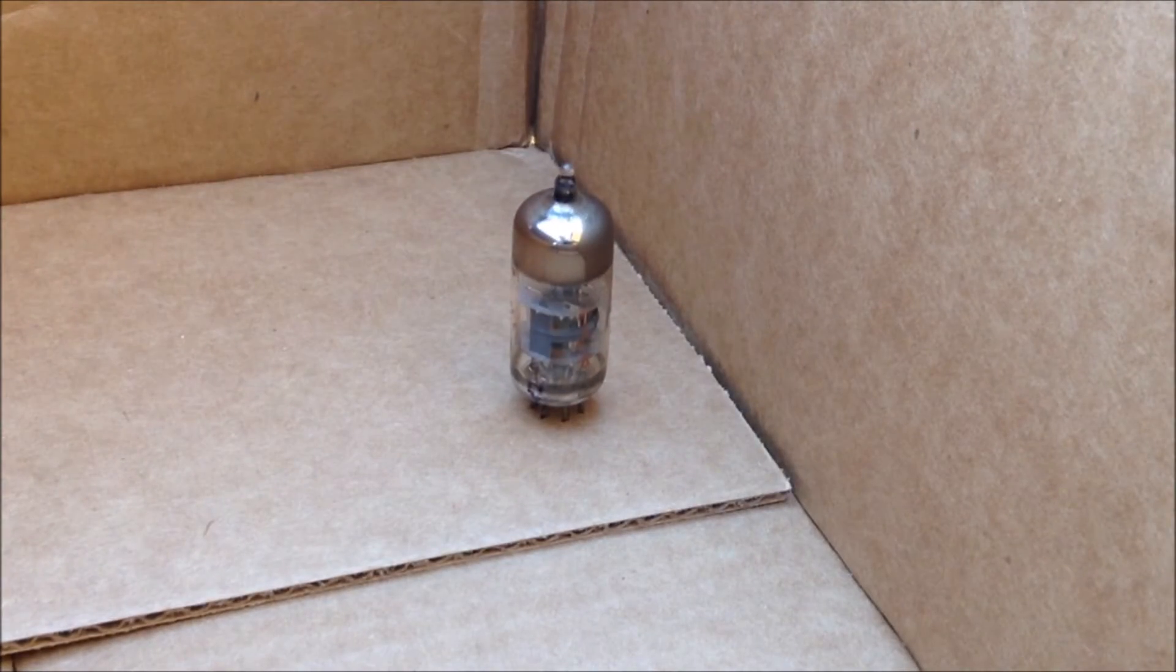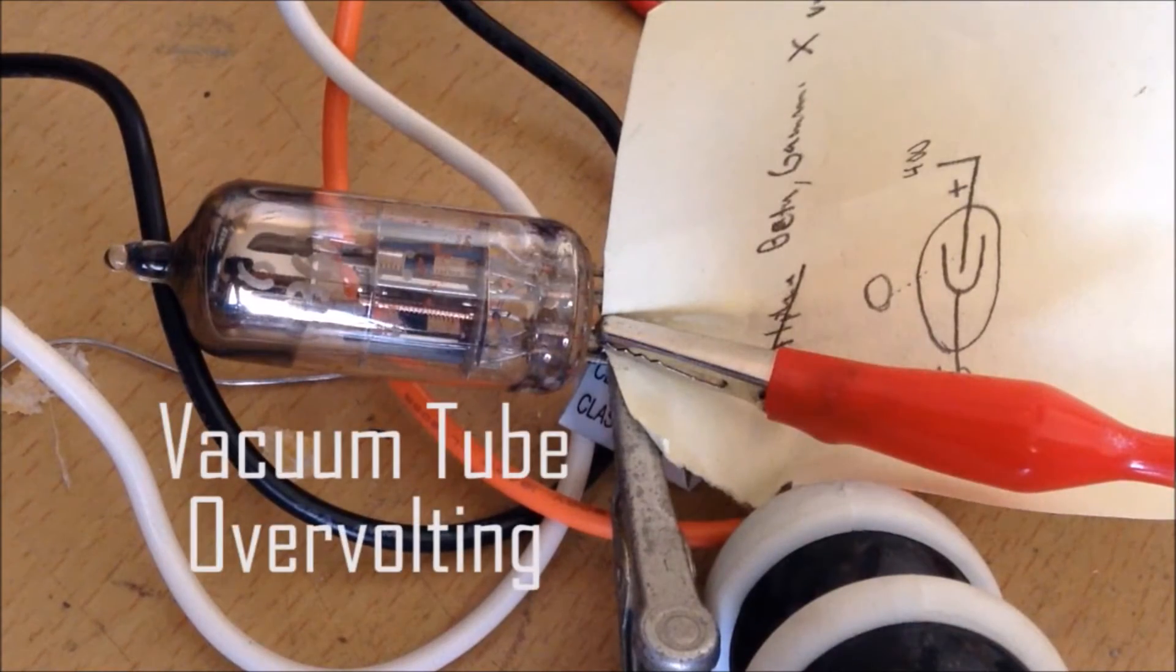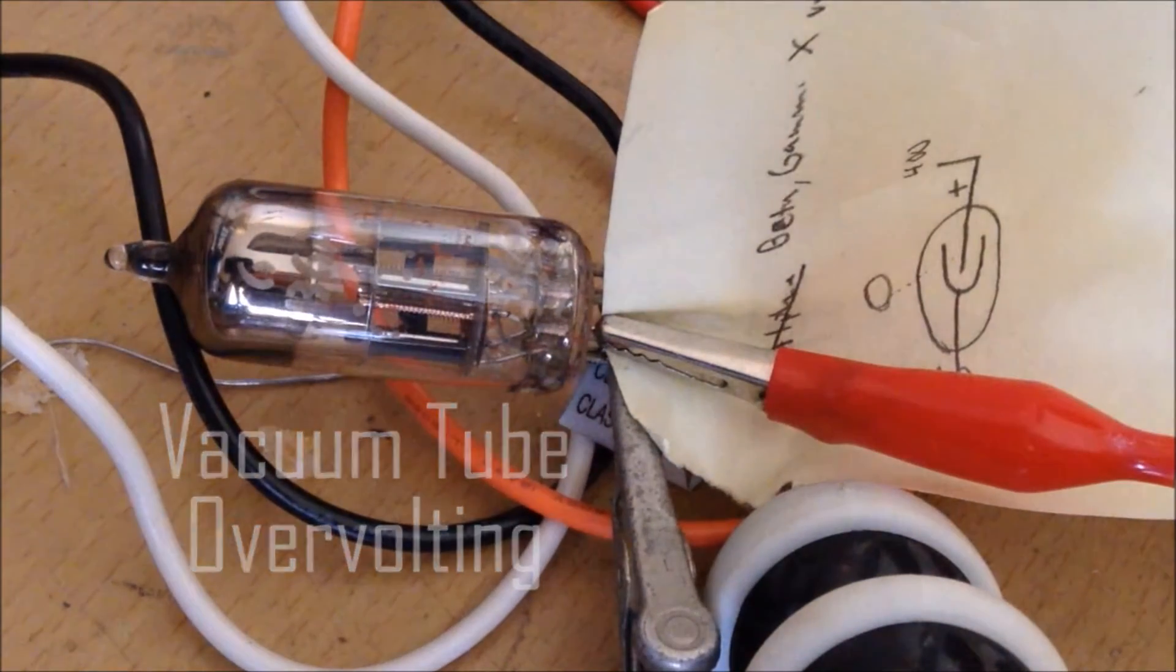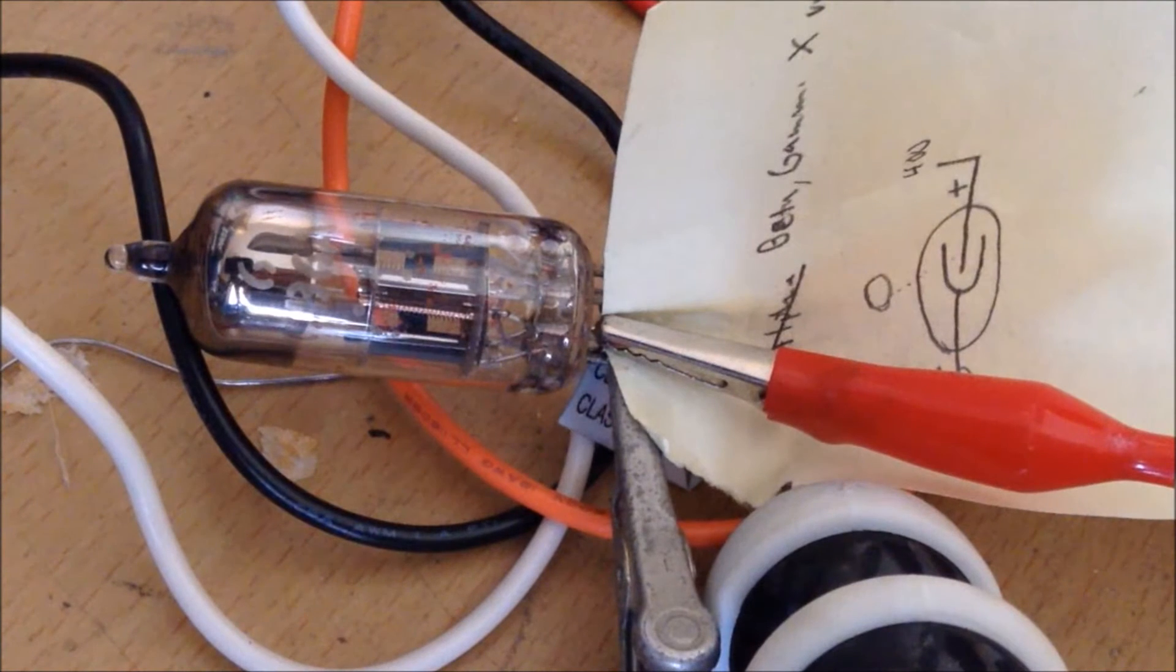So now to burning out the filament. This is what happens when you overvolt your vacuum tubes. So, when I turn up the filament voltage, it's fine so far. The heater warms up.